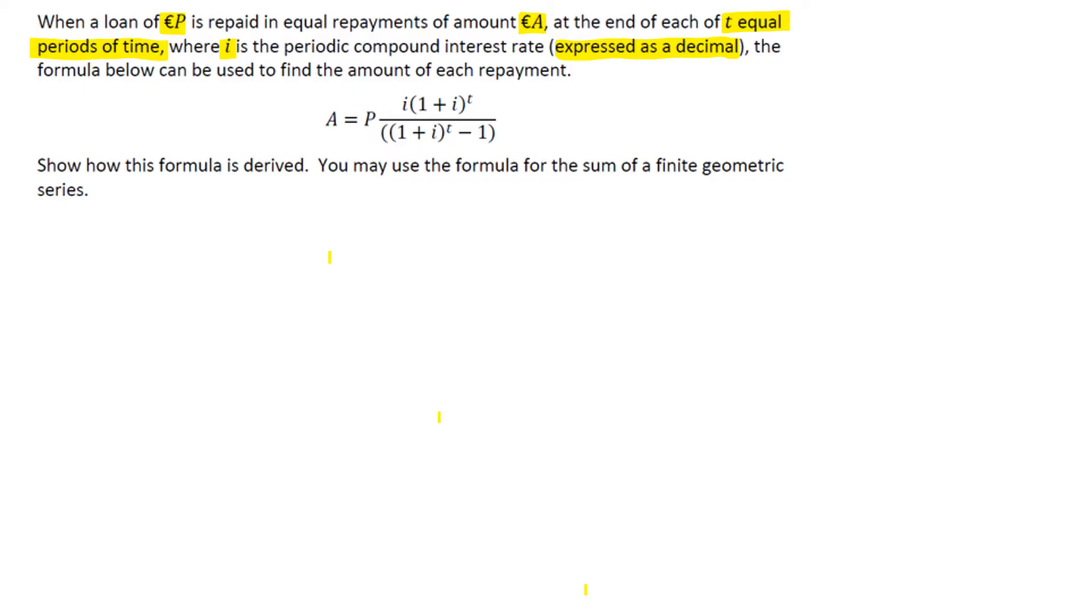So what we have is we have a loan here. This is your loan and we've taken it out and it's P and to pay back that loan we're going to pay back A and that is period one, so that's T1.